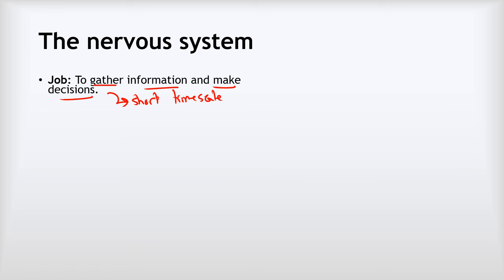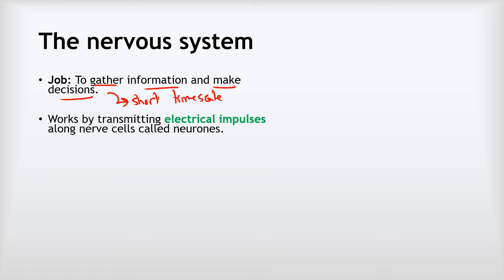The nervous system is able to do this by transmitting what we call electrical impulses along specialised cells — nerve cells — which we call neurons. The nervous system is entirely made up of all these different nerve cells, but they're in two main parts.